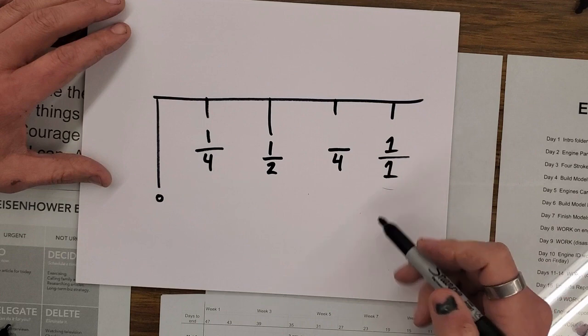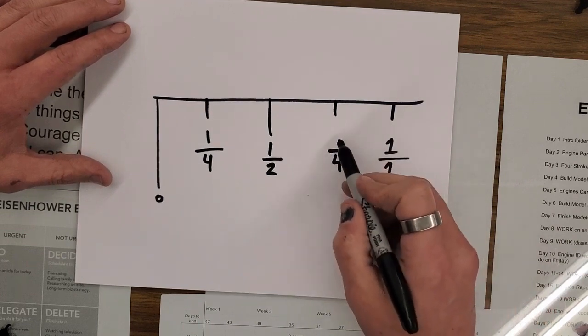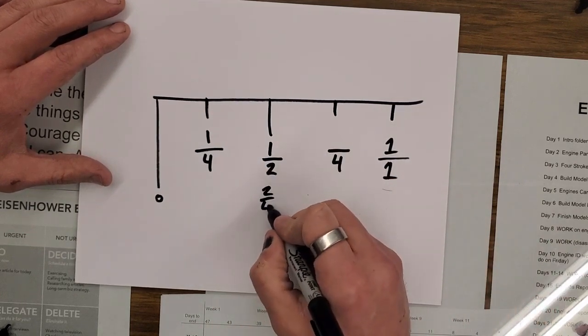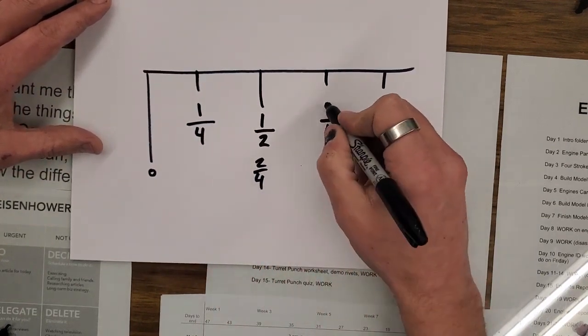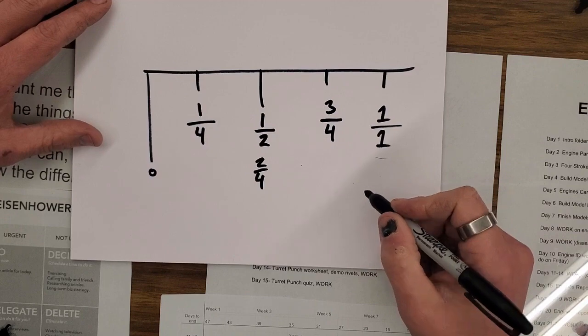And here's where some people get confused. They start counting. One, two. Well, this isn't two because this is two. We can write this one as two fourths. One, two. That makes this one three fourths.